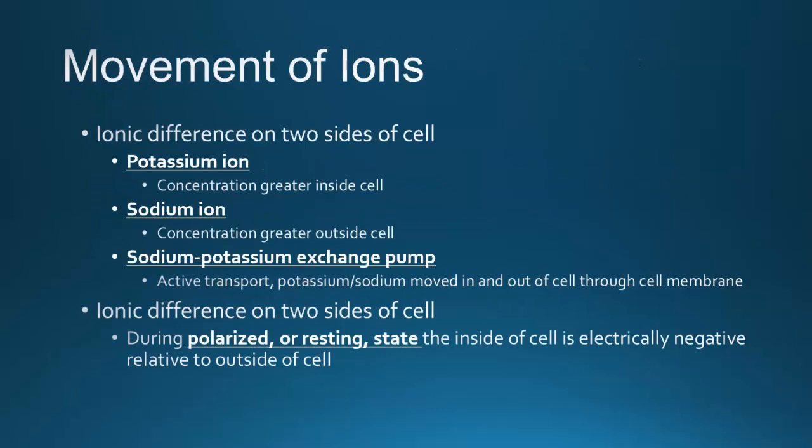In order for depolarization to occur, you've got to move the ions from inside the cell to the outside and vice versa. A cell in its resting potential is negatively charged compared to the extracellular space. During the resting or polarized phase, potassium is greater inside the cell and sodium is greater on the outside. Cells move sodium and potassium in and out through the sodium-potassium exchange pump, and there are also other protein gates that help move ions such as calcium.